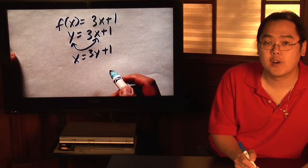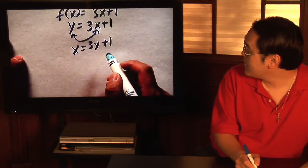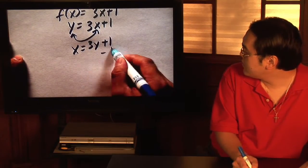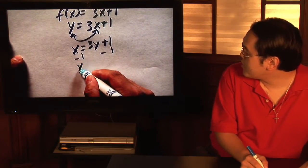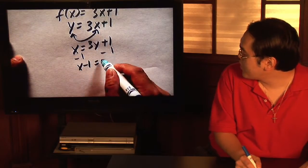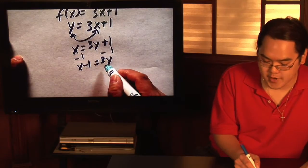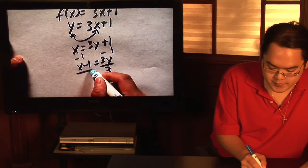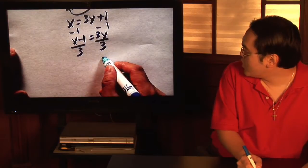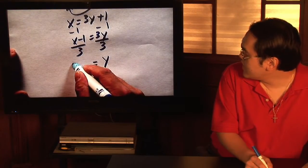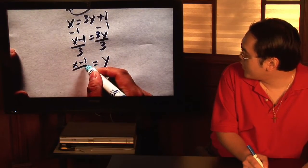Now is the time to solve for y. Get y by itself. So first of all, subtract 1. So you have x minus 1 equals 3y. And then to get y by itself, just go ahead and divide by 3. So you will get, as a result, y equals x minus 1 over 3.